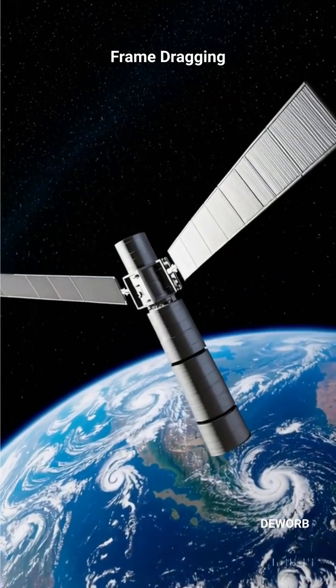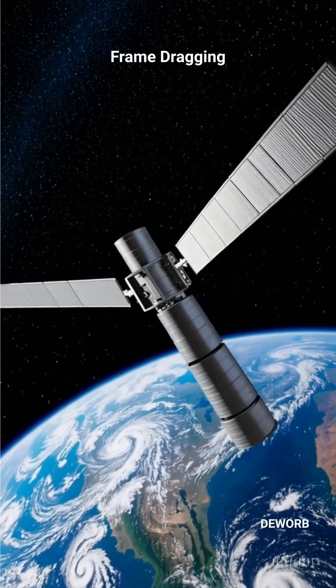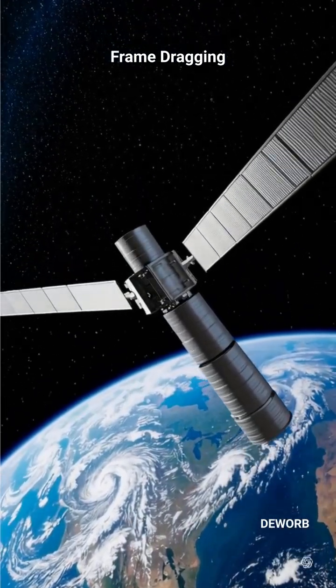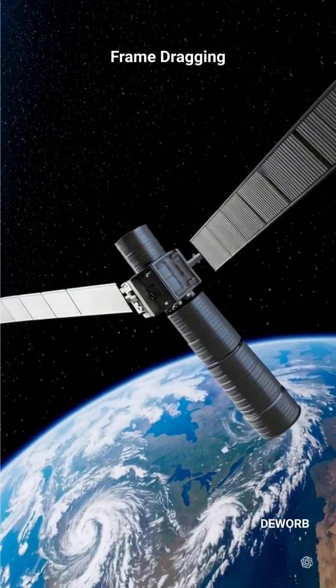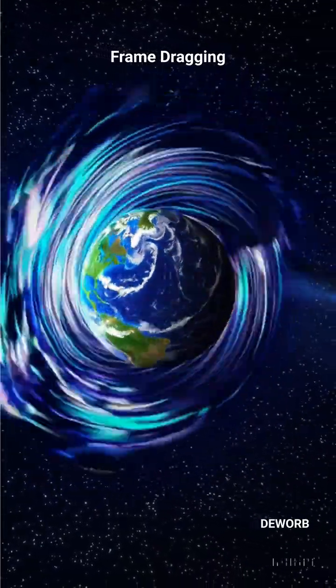Gravity Probe B, a NASA experiment, tested this in 2004 by placing ultra-precise gyroscopes in orbit. If space were completely still, the gyroscopes would stay aligned.